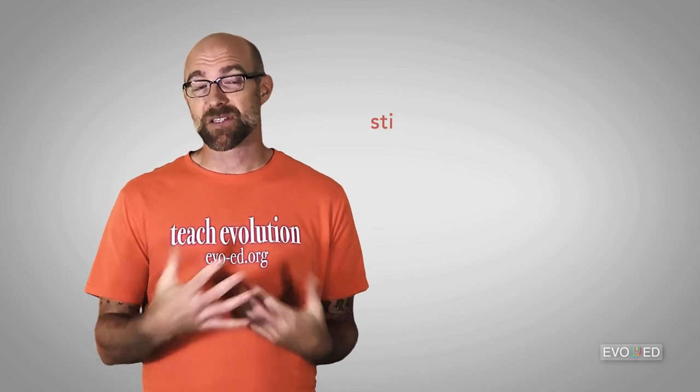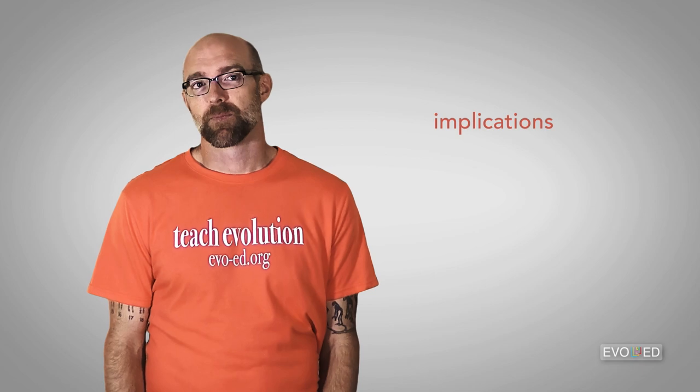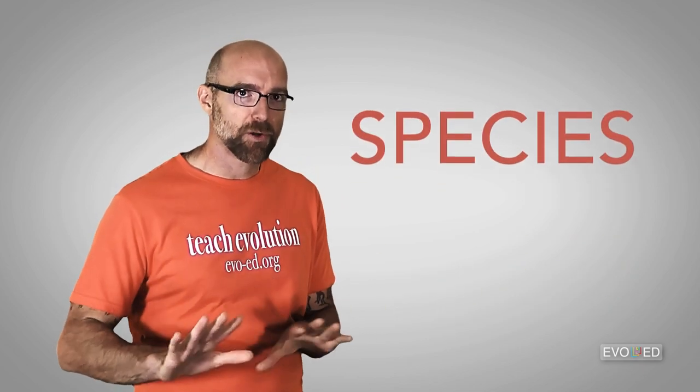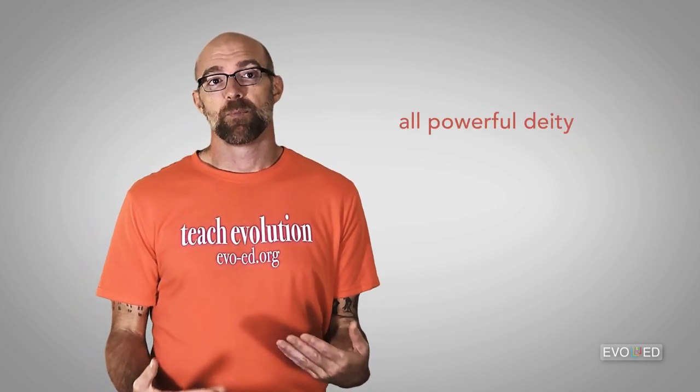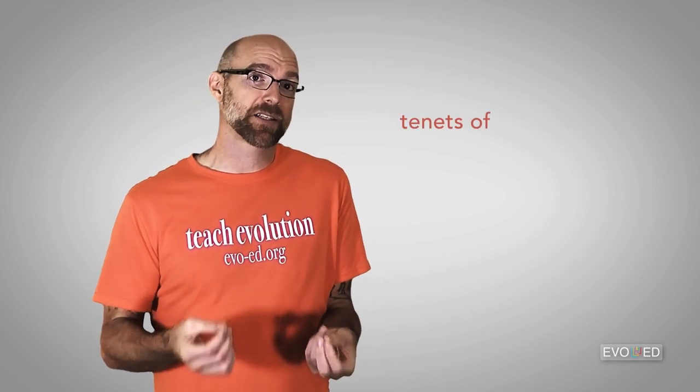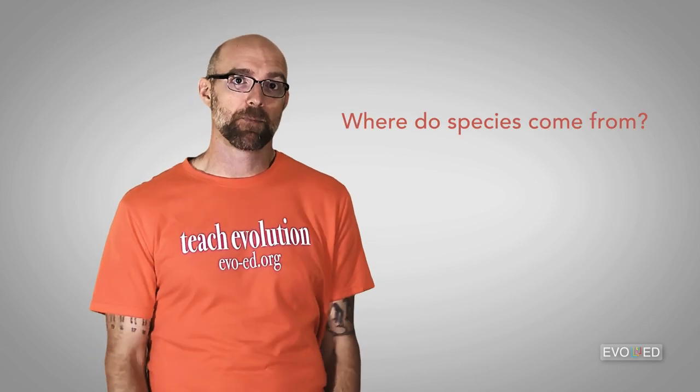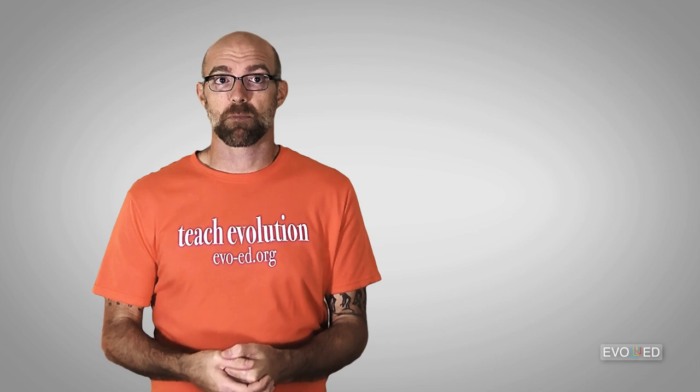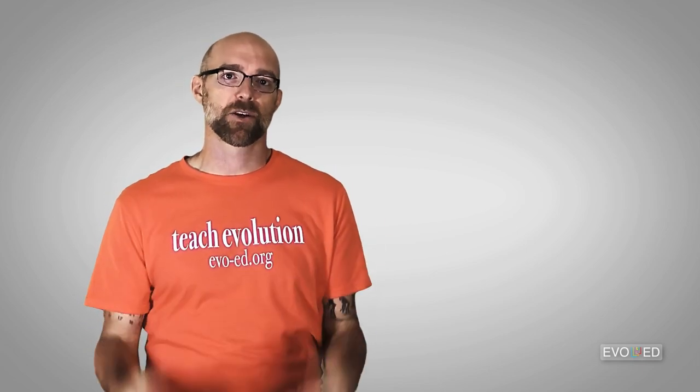I suspect that a big part of the stigma against evolution in America is because of its implications. If species arose purely through natural processes, instead of being breathed into existence by an all-powerful supernatural deity, then for some people it may call into question some of the tenets of their religion if their religion adheres to a supernatural creation narrative. And if a religion is wrong about something as fundamental as where do species come from, then there could be some concern that it might then also be wrong about other important things. It would be simpler in those situations if species didn't arise through evolution, or even if humans didn't evolve. Then there would still be space to accommodate a simple and straightforward deity-based creation narrative.